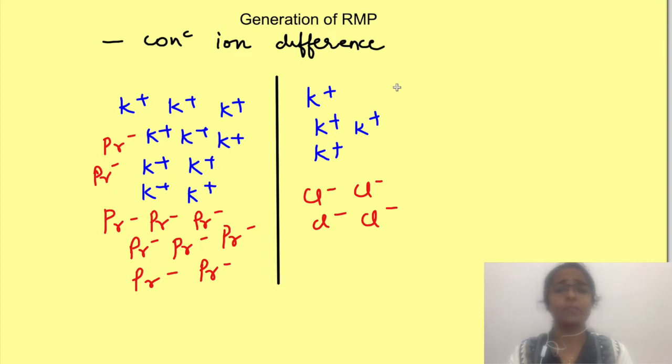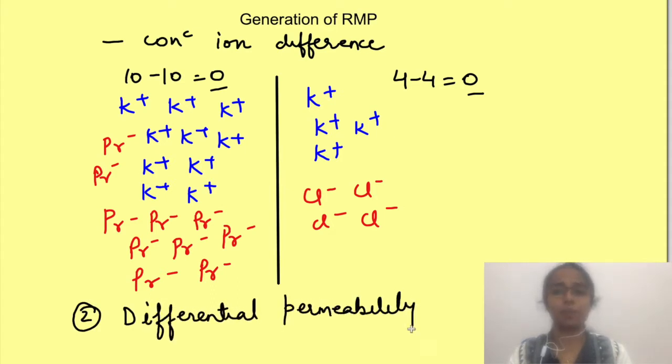But will this be sufficient? See, even with the difference in concentration of ions, net charge on both sides is zero. So actually there will be no potential difference. So second requirement for generation of RMP is that membrane should be differentially permeable to ions.